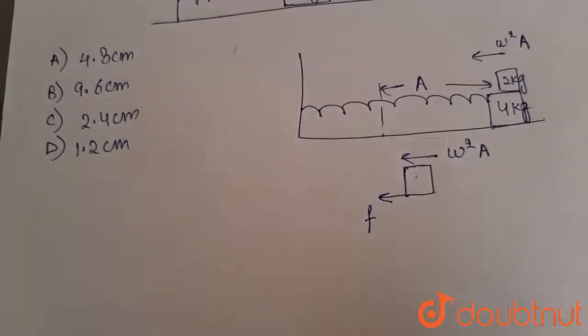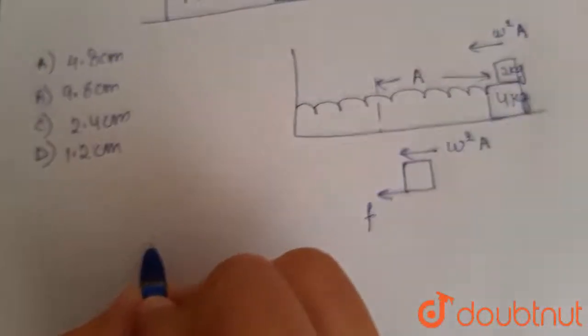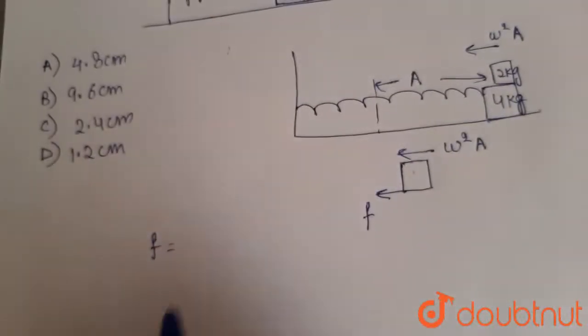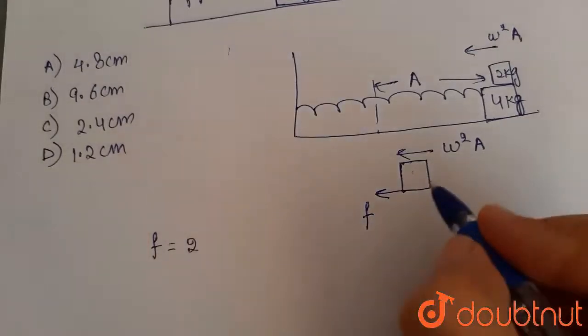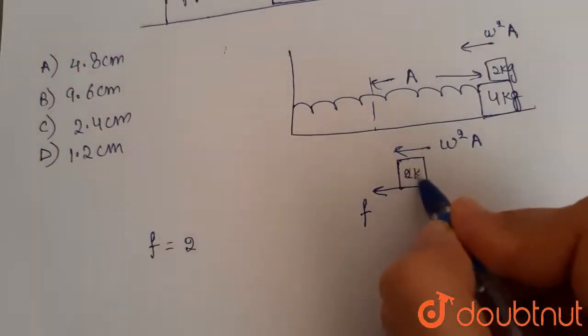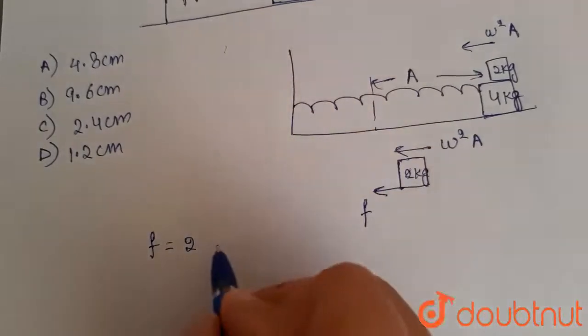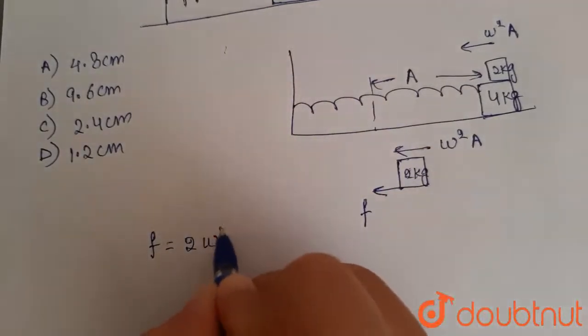So I can write this friction, F is equal to mass of the object, which is 2 kg, because we have drawn the FBD of 2 kg. So this is our system here. So this is 2 into omega square into A.